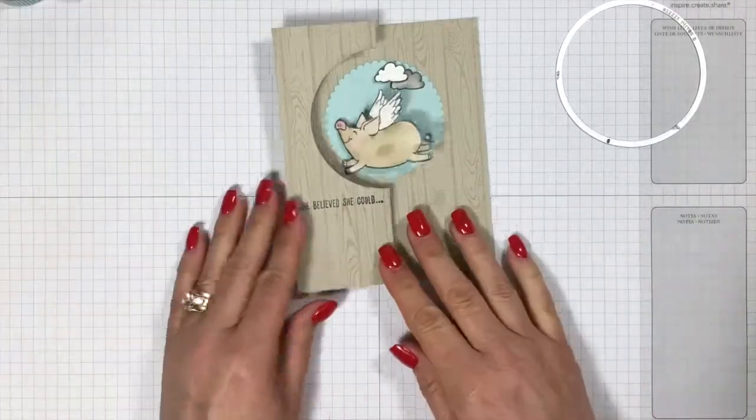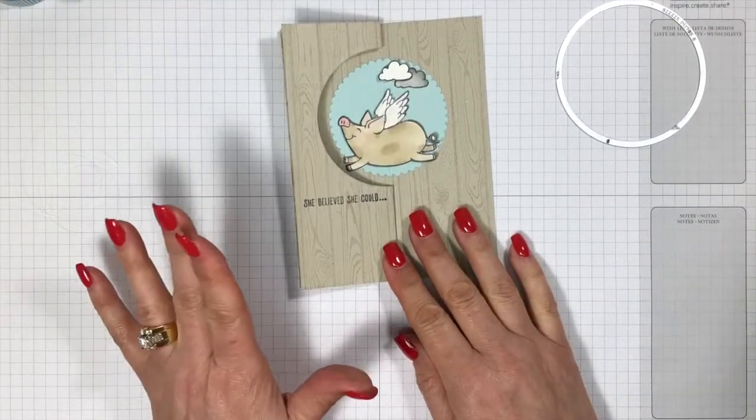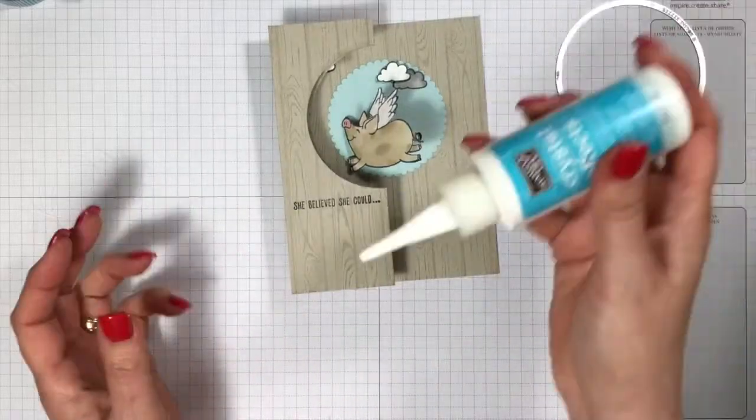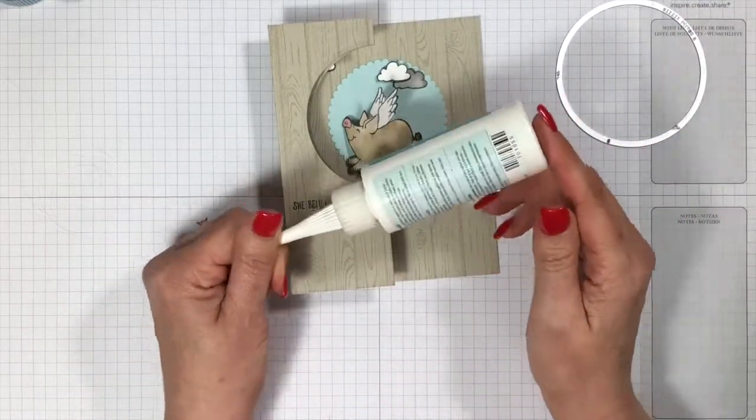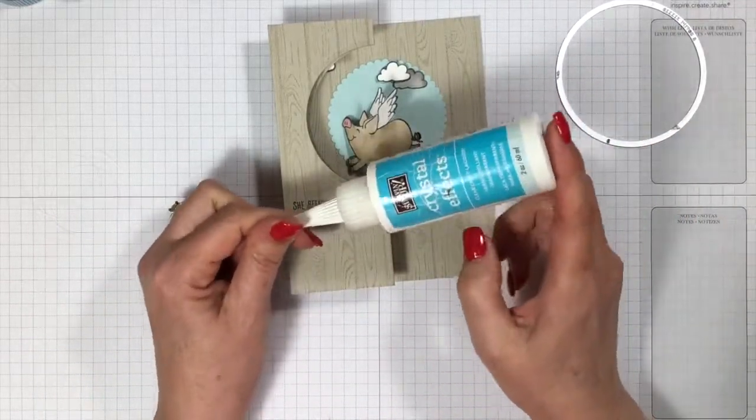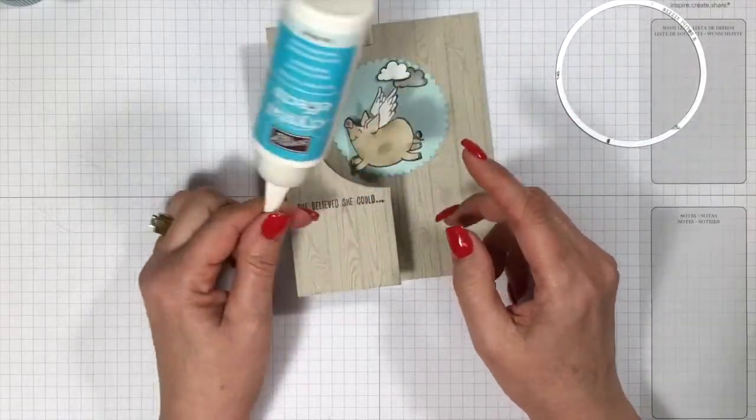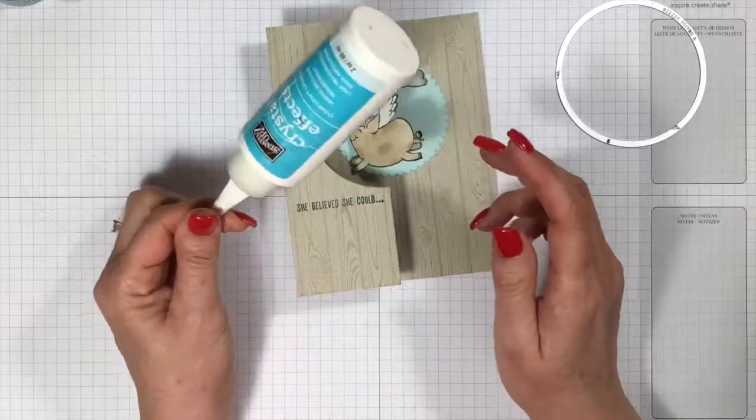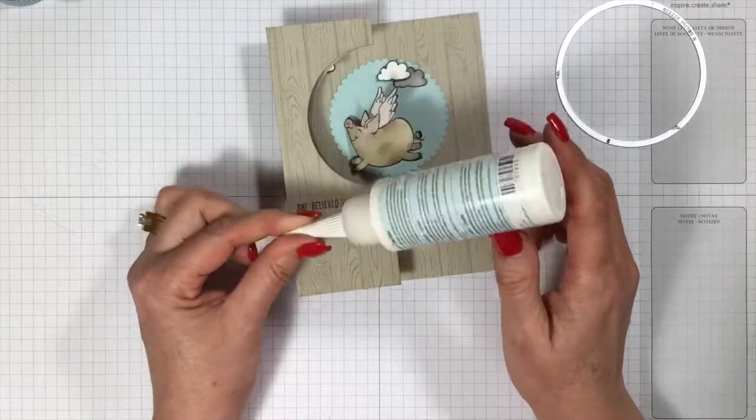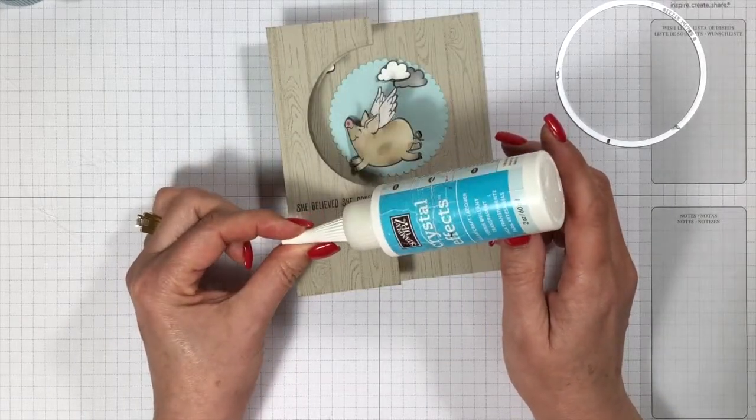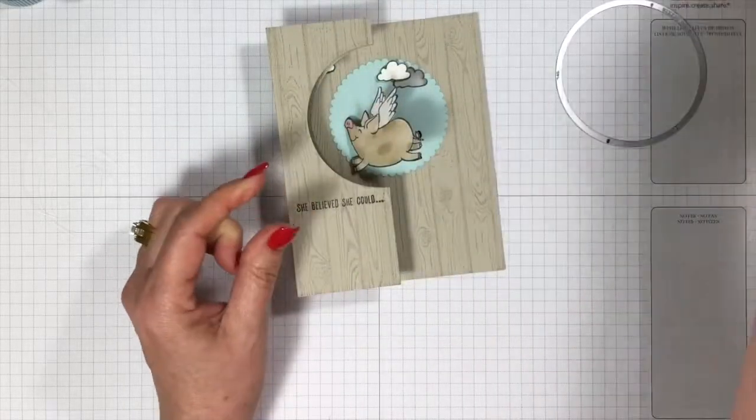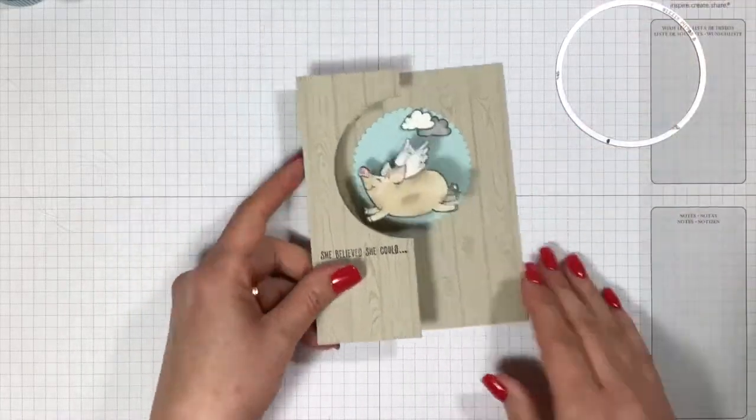So you're going to need those three items. The other thing you're going to need is some crystal effects. Now I have still a really old bottle kicking around, but this works really well for what we're doing today. If you don't have crystal effects, later on in the video, I'll show you a few different things that you could do besides using crystal effects. But that's what I'm going to use today.